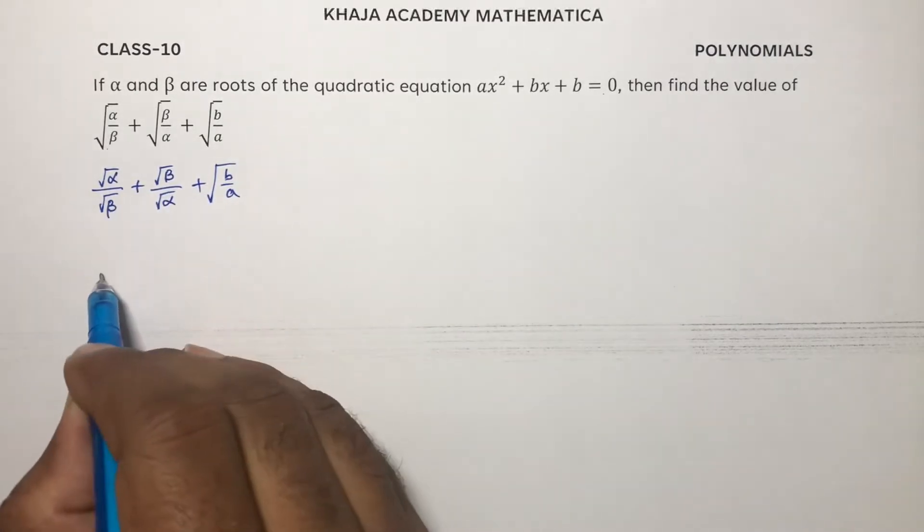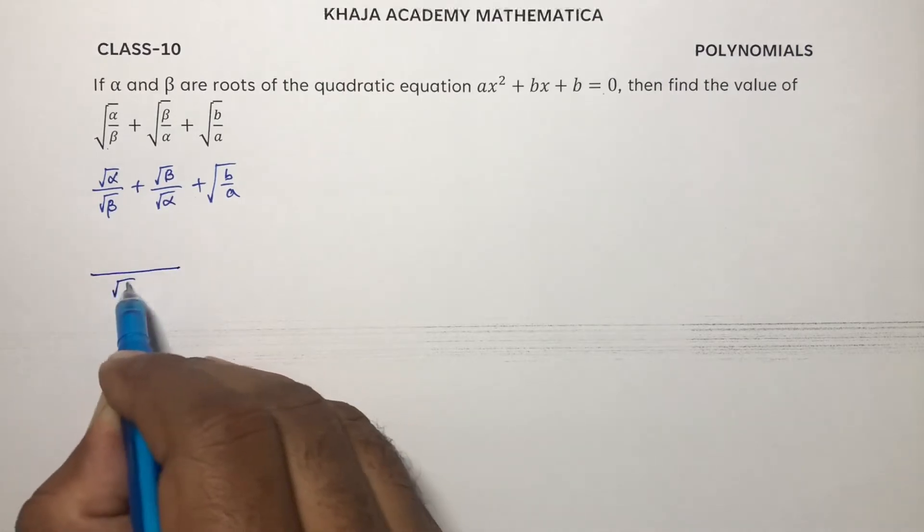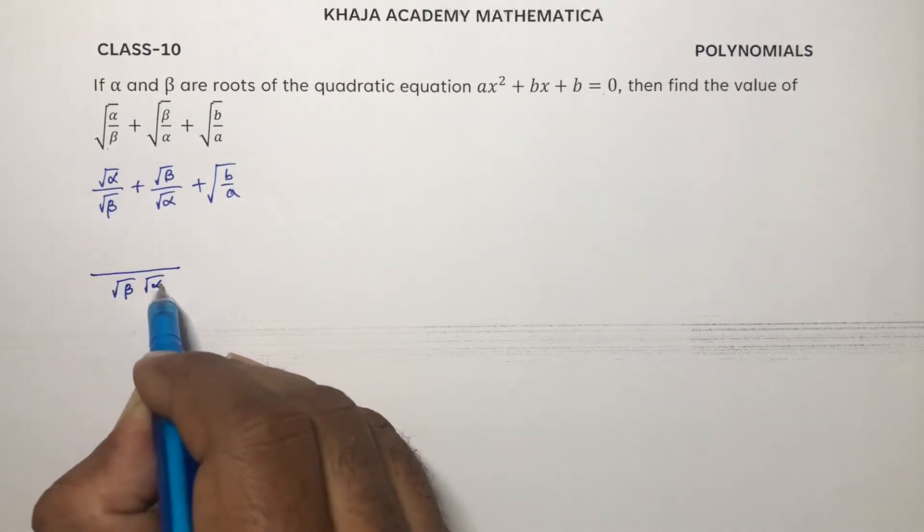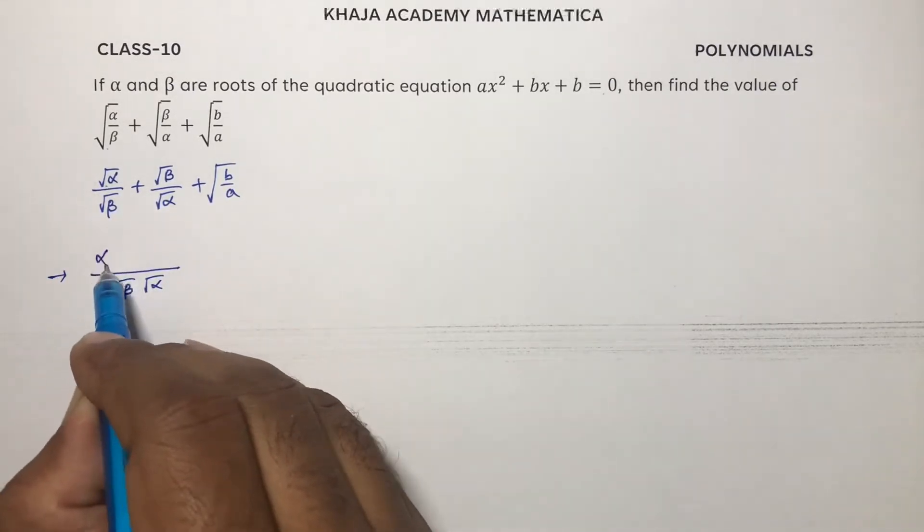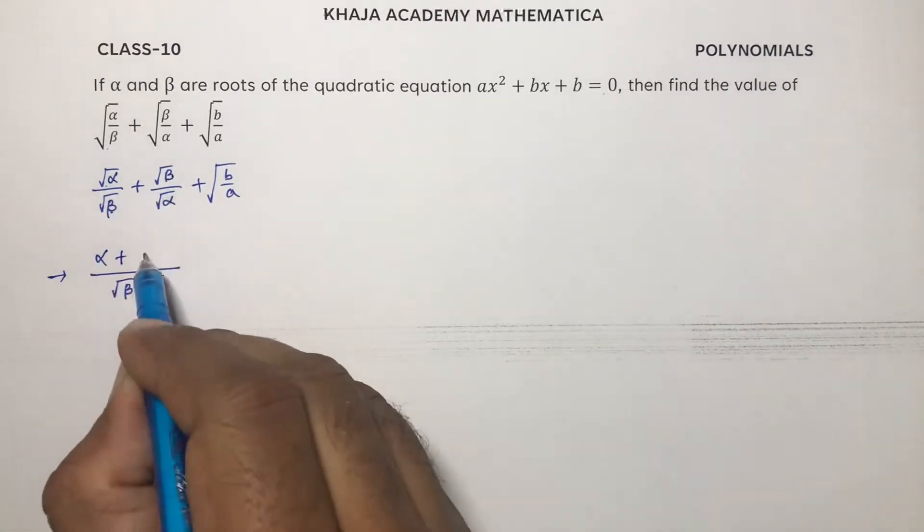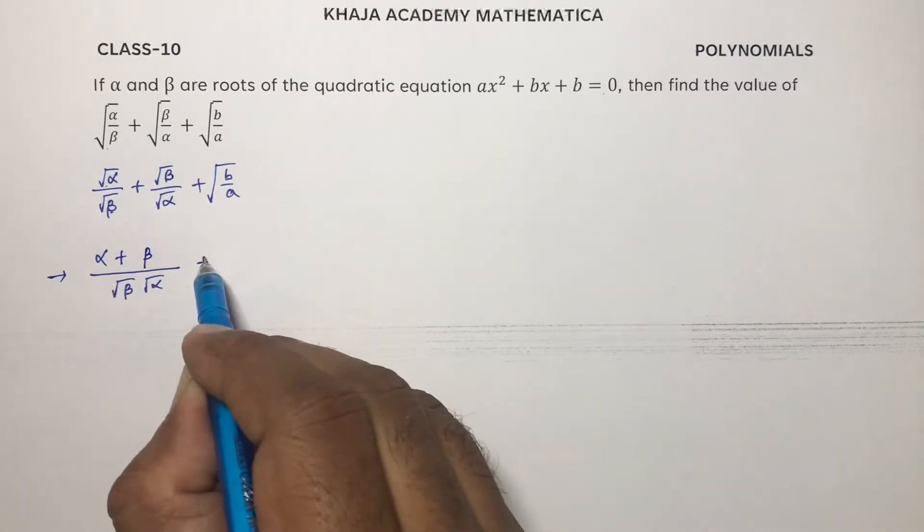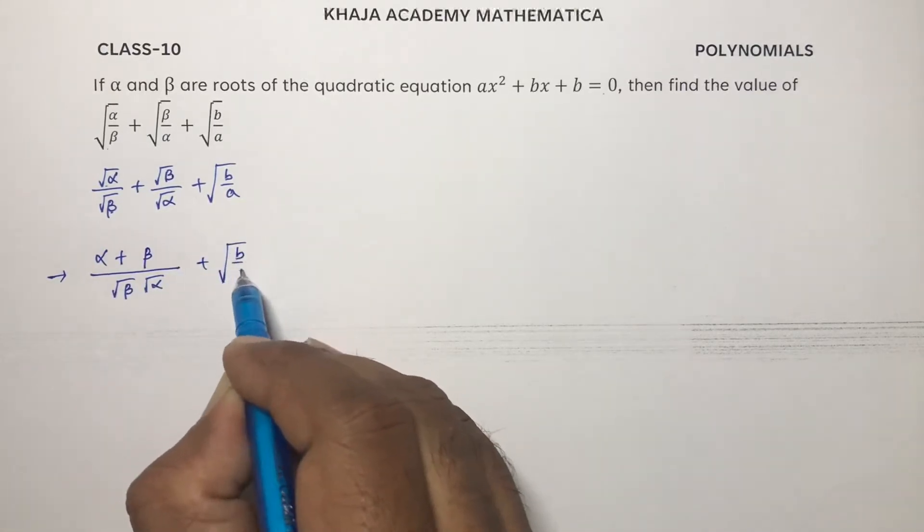In these two terms, if you take the LCM root beta into root alpha, and multiply, here root alpha into root alpha is alpha, root beta into root beta is beta, plus root b by a.